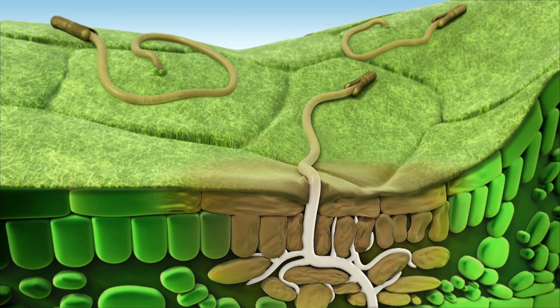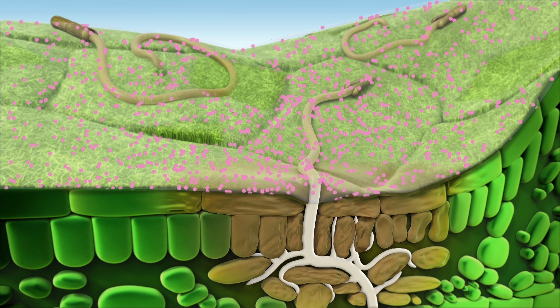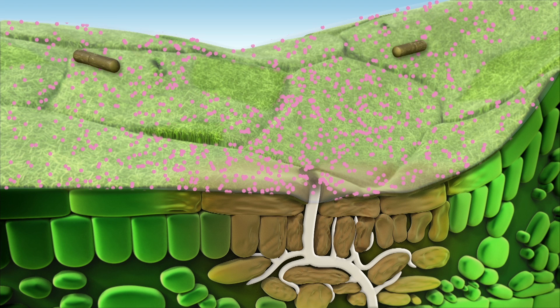Chlorothalonil is a non-systemic multi-site foliar fungicide and works by targeting various enzymes and the metabolic development of the fungus. Providing protective activity before the disease enters the leaf, it inhibits spore germination and destroys fungal cell membranes.